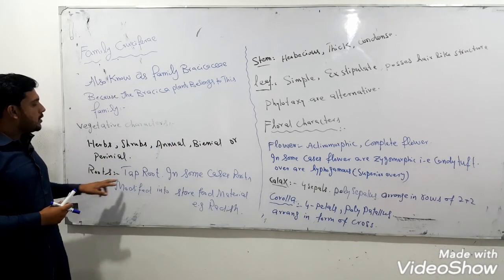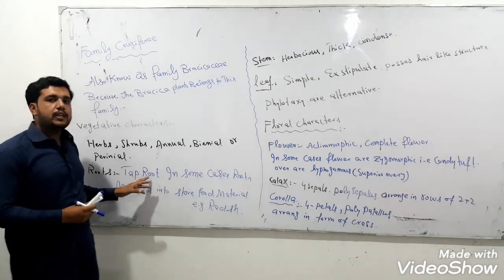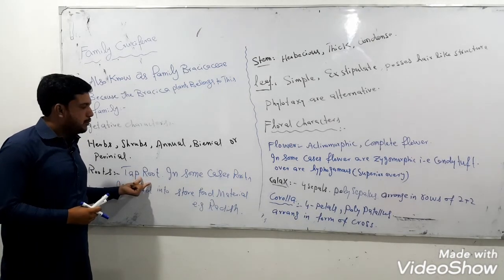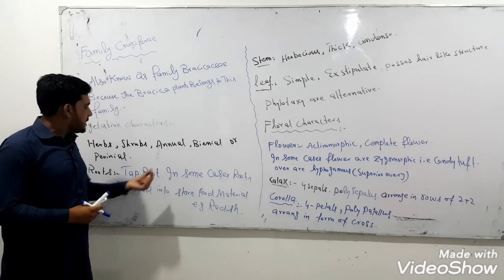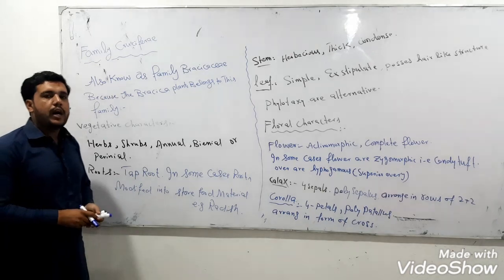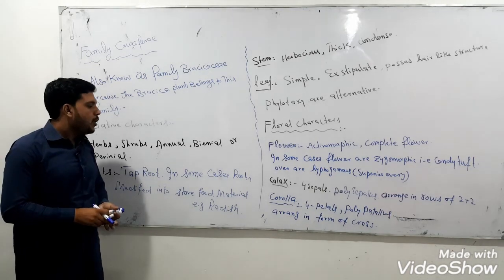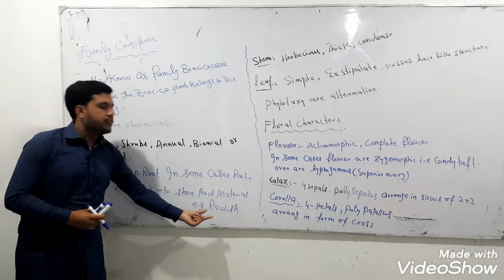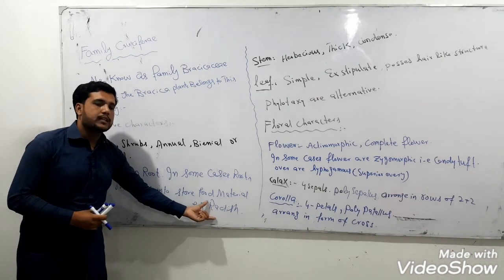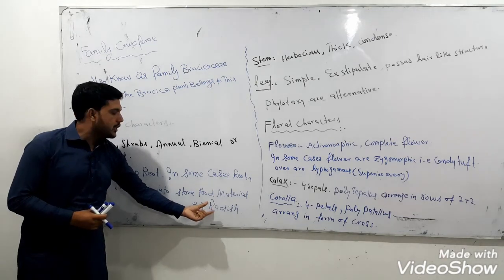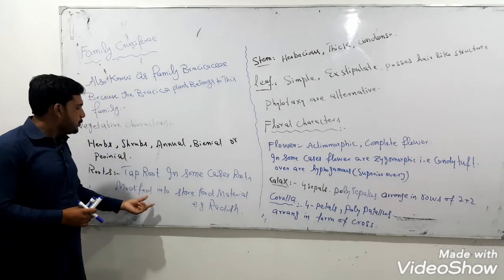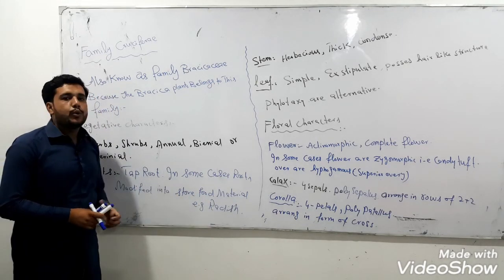The majority of members of this family have tap roots. In some cases, the roots are modified to store food material. For example, the radish — the radish is a form of root which stores food.